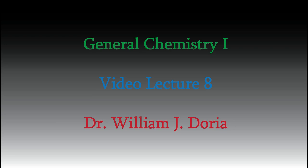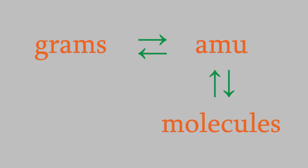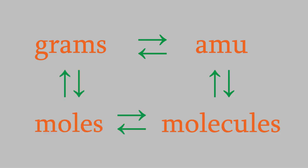Hi, and welcome back to my series of videos for General Chemistry 1. In the last video, we talked about moles and Avogadro's number, and we learned how to convert between grams, AMUs, the number of molecules in a sample, and the number of moles. In this video, we'll use that knowledge to perform the most common calculations that chemists ever do. If you learn to master the concepts in only one video in this course, make it this one.